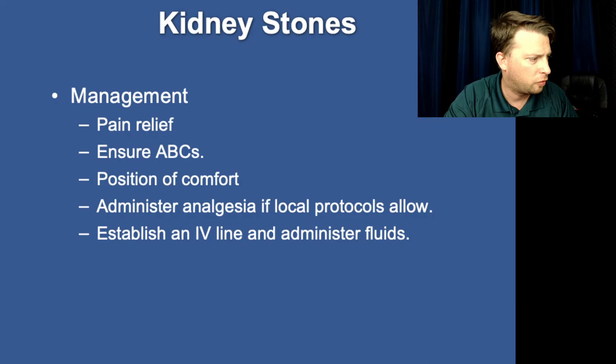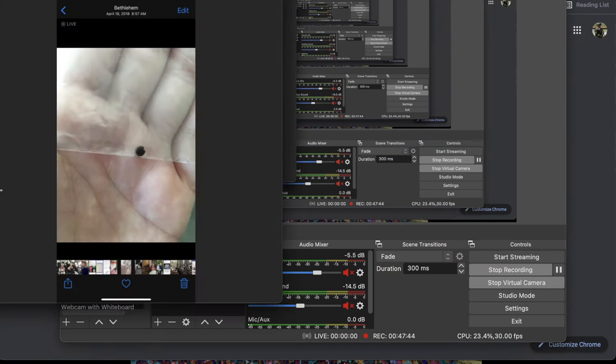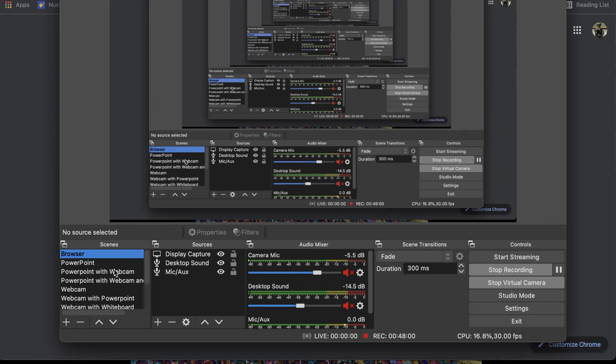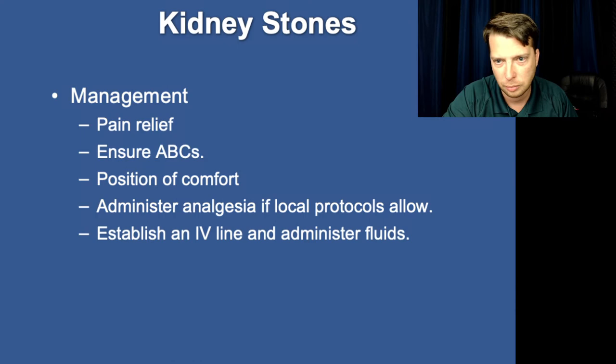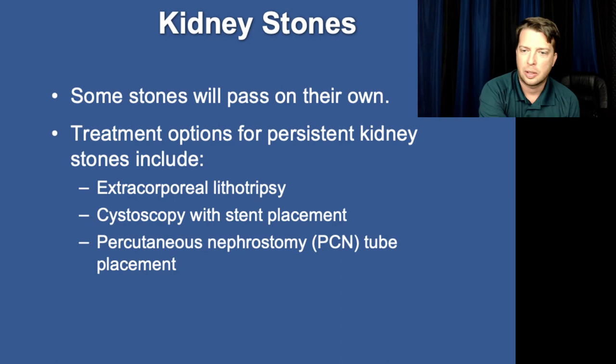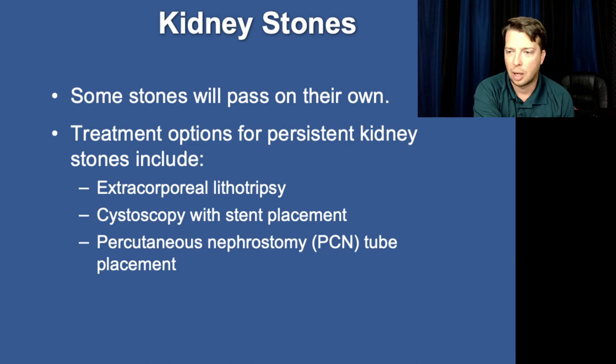Let me flip to this so everybody can see it — that's an example of a kidney stone. Extracorporeal lithotripsy, cystoscopy — that's where the stent placement is. They go up through the bladder and place the stent. Percutaneous — they're actually going to do surgery and drain the kidneys surgically.